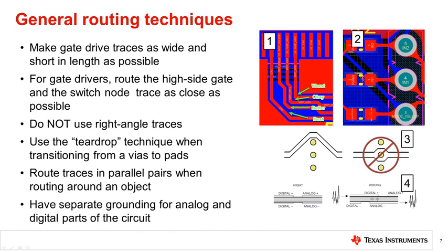A last general routing technique is to have separate grounding for analog and digital parts of the circuit to reduce ground noise. Image 4 shows an illustration of a correct and incorrect grounding topology.